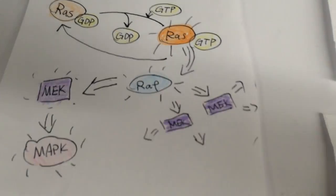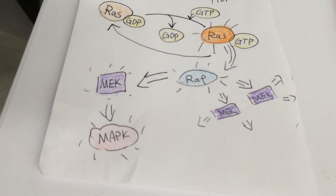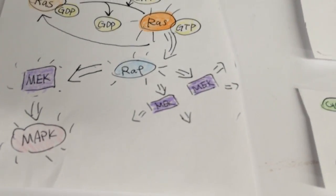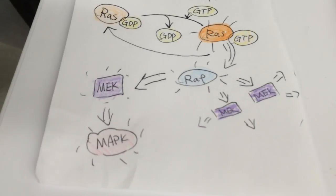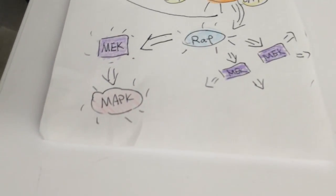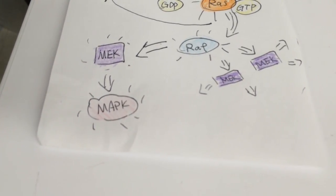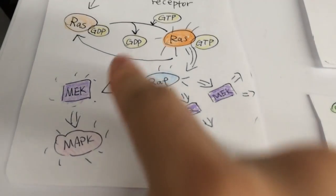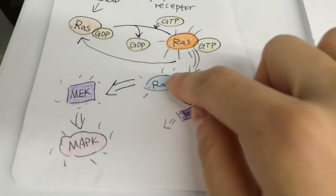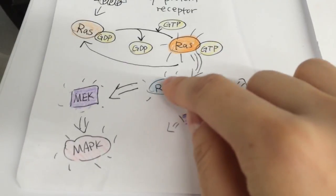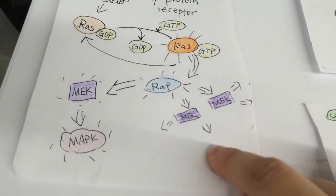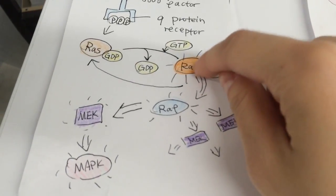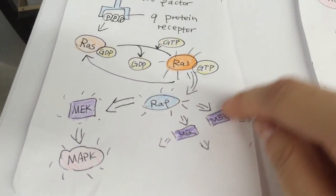RAF, as a kinase, activates another kinase called MEK, which activates another kinase called MAPK. Each step of activation amplifies the signal of the division, because as one enzyme is activated, it goes on to activate a second enzyme. At the same time, the original enzyme can keep working as well, since enzymes do not change after a reaction.